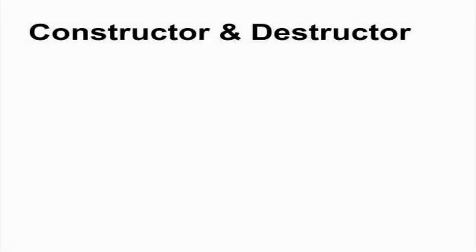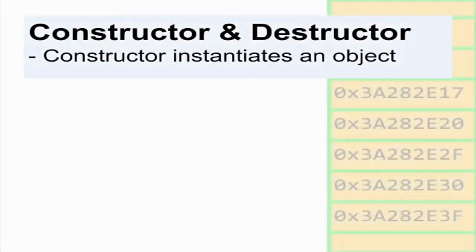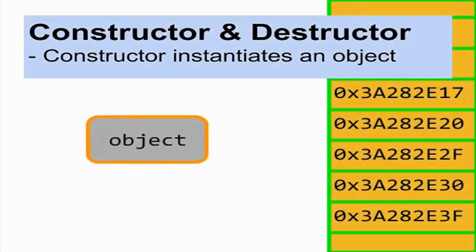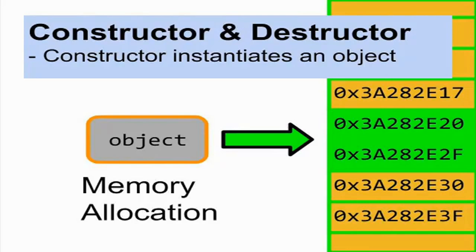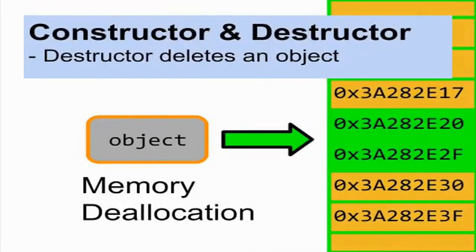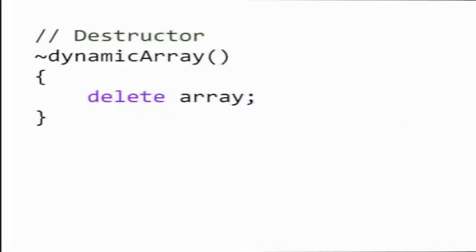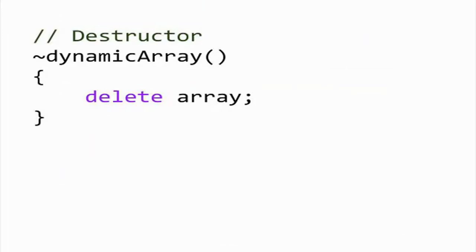In general, objects have two basic methods: the constructor and the destructor. The constructor is what instantiates the object and allocates dynamic memory as needed. A constructor that takes in parameters is called a normal constructor, while one that does not is called a default constructor. The destructor is used to deallocate any dynamic memory used by the object, and is called at the end of the object's lifespan or when the program terminates.